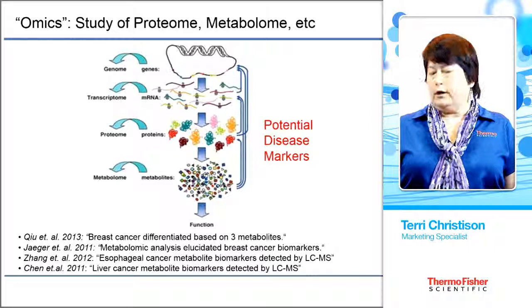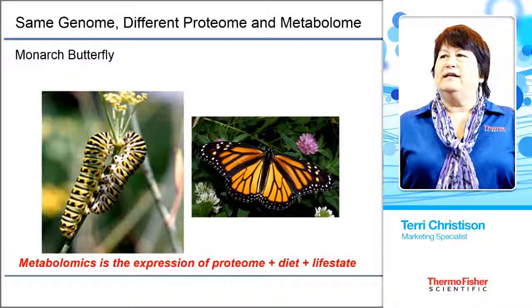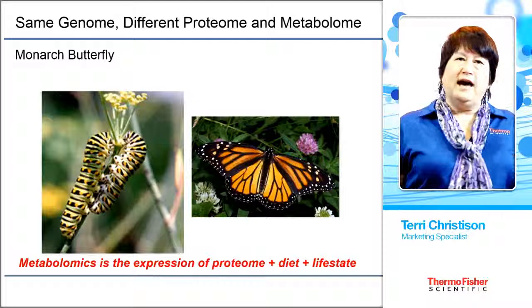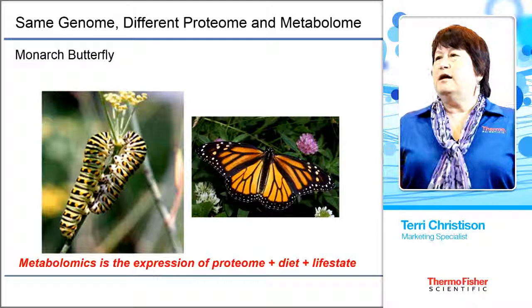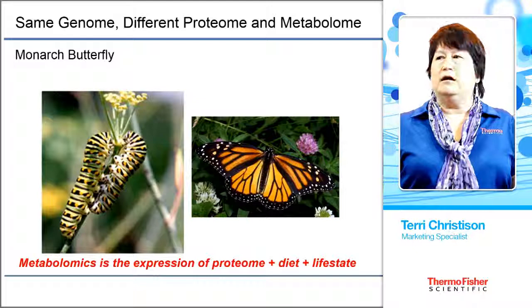To understand the difference between genome, proteome, and metabolomics, we have here an example of the monarch butterfly. It's always going to be a monarch butterfly — that's the genome. But as you can see, it starts out as a caterpillar, and that's the proteome and the metabolome, and then it becomes a beautiful butterfly. It has different lifestyles: the caterpillar eats different plants, and the butterfly eats nectar from the flowers. That is definitely the metabolomics — it's expression of the proteome, the diet, and the lifestyle.